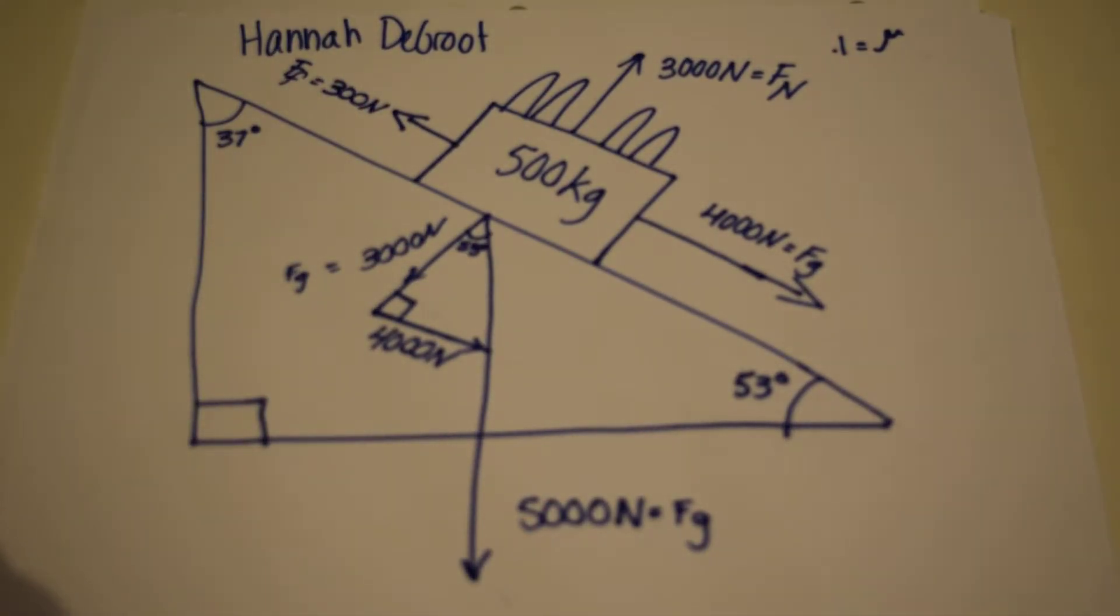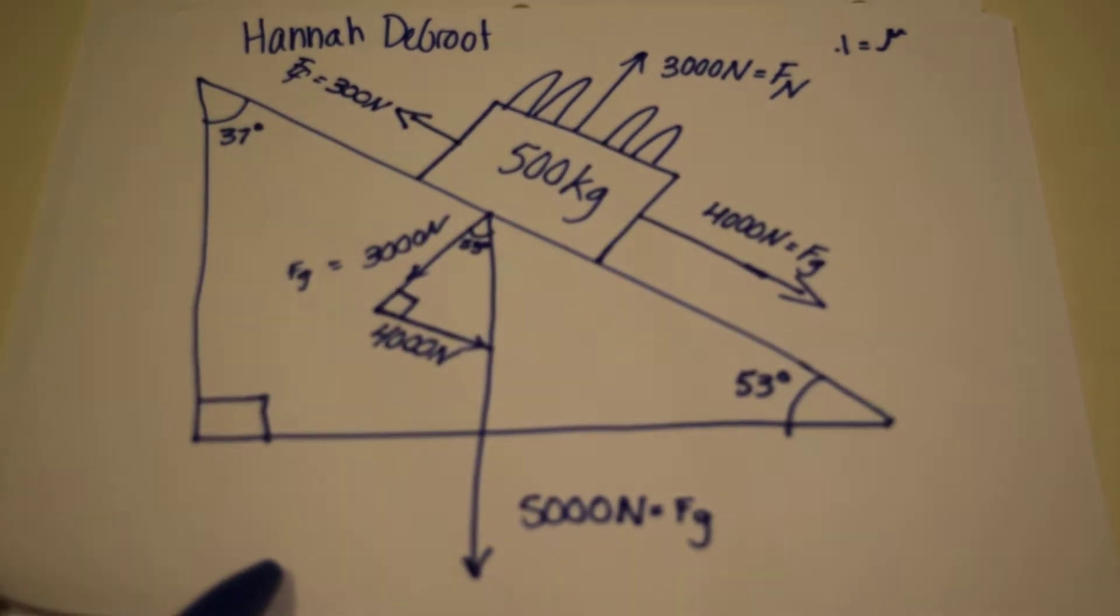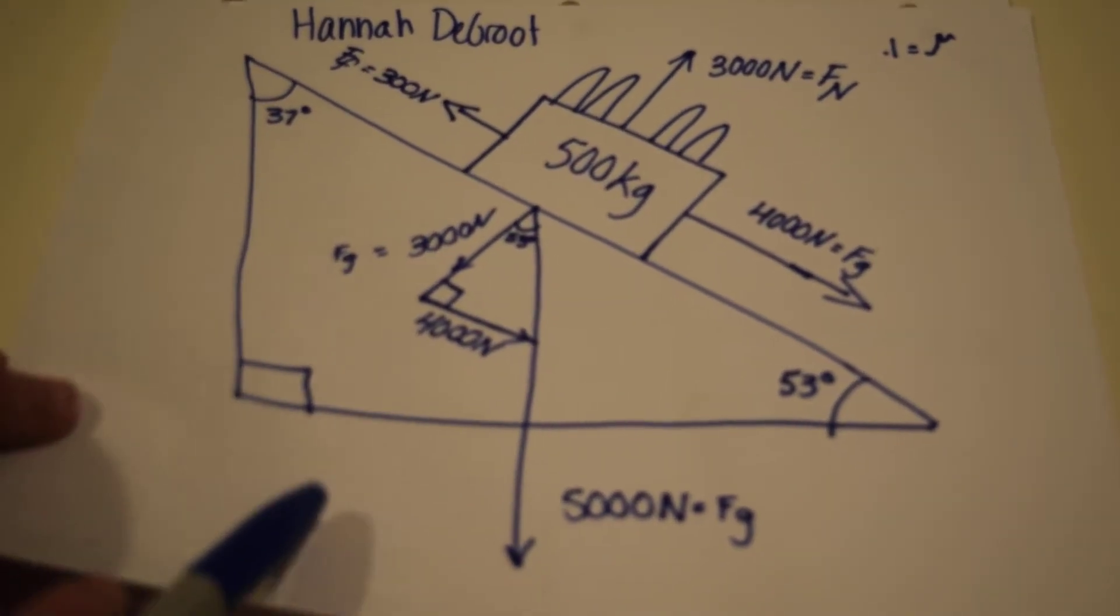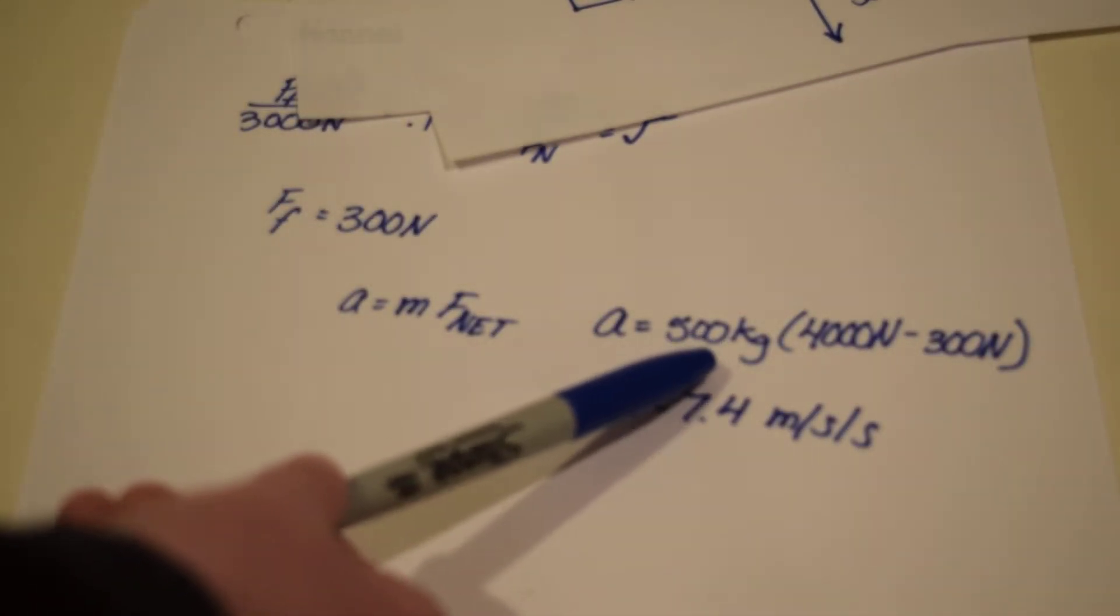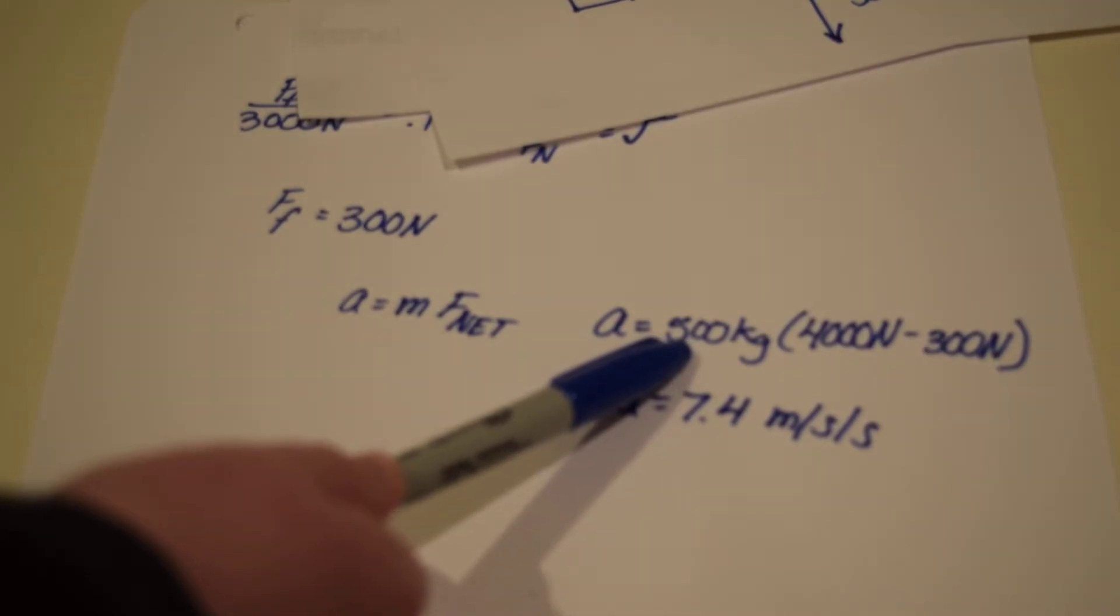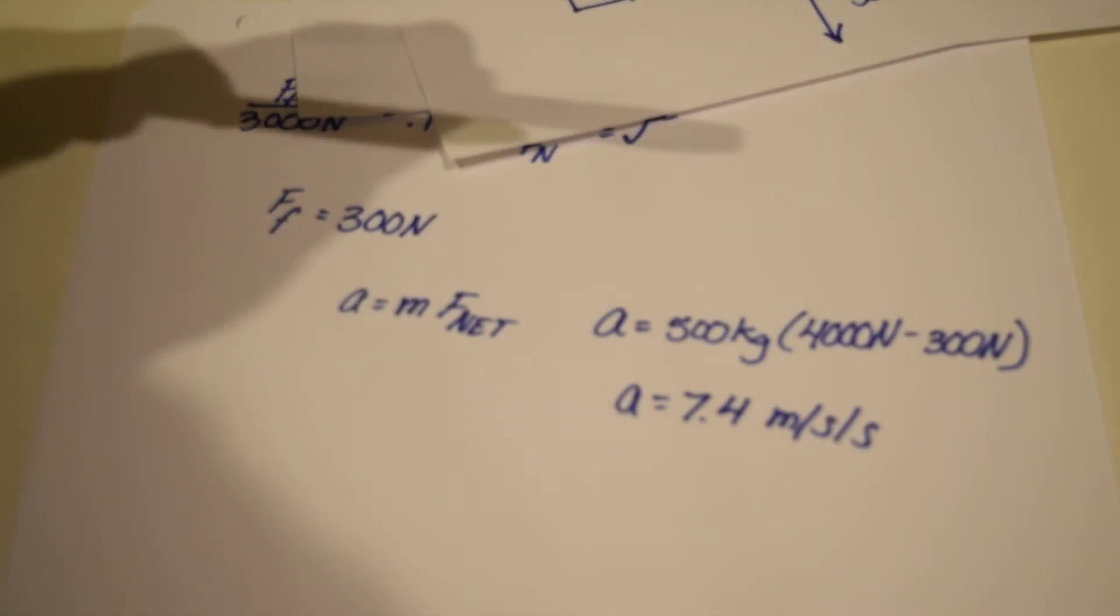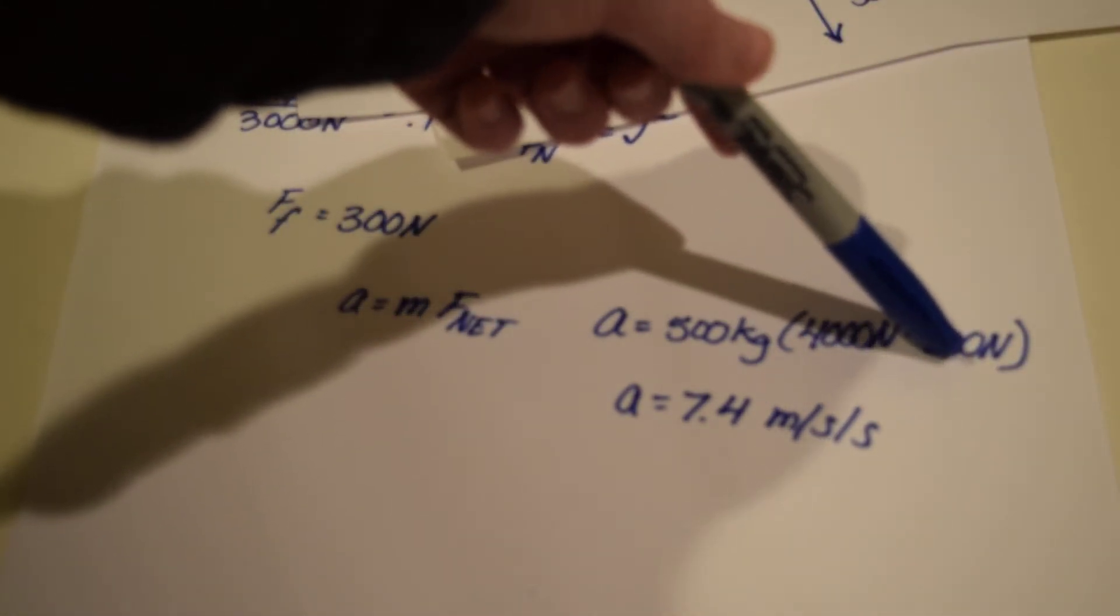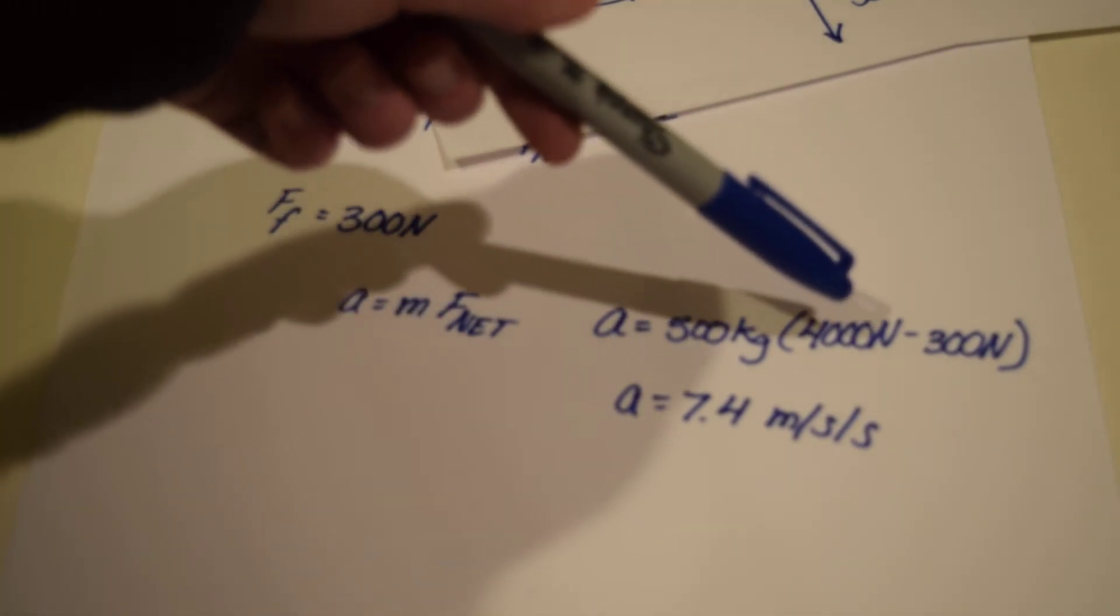And so we take the net force of these two so we subtract one from the other and I did that here. So we have 500 kilograms that is the mass and then we have 4,000 which is the gravity propelling us downward and then 300 newtons is the friction force and so once we solve for that.